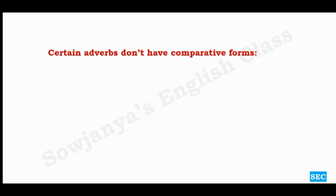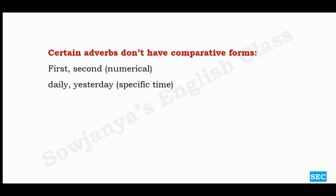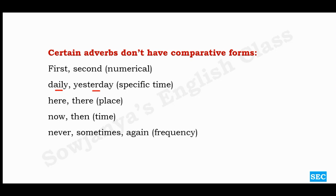Certain adverbs do not have comparative forms at all. Numerical adverbs like 'first' and 'second' — we can't say 'more first' or 'most first.' Time adverbs like daily, yesterday, today, tomorrow — we can't say 'more daily' or 'most yesterday.' Place adverbs like here and there — 'more here' or 'most here' is not possible. Time adverbs like 'now' and 'then' also cannot take comparative forms. Adverbs of frequency like 'never' and 'sometimes' — we don't say 'more never' or 'more sometimes.'